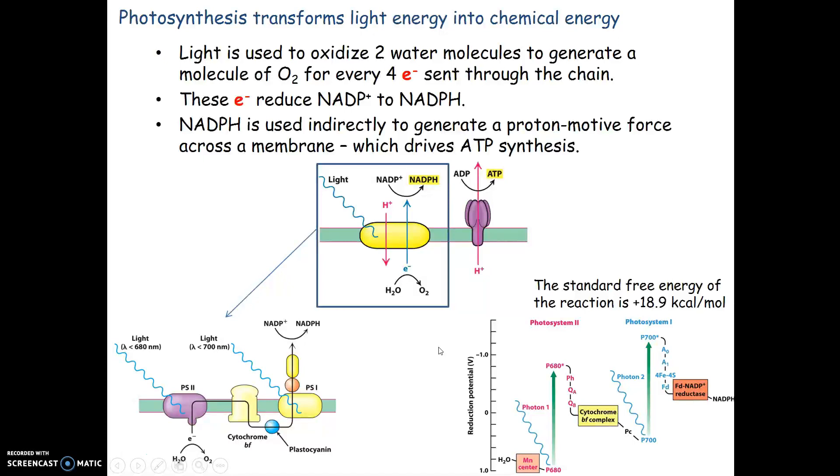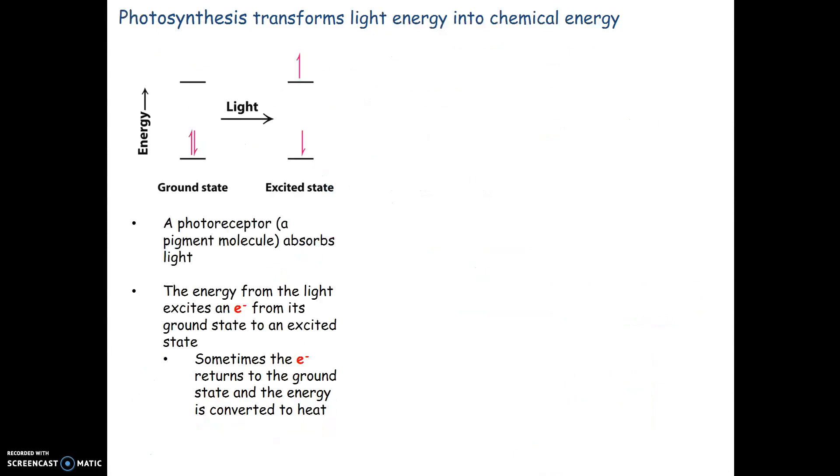This process allows us to form NADPH that we can use later on. This is going to create a proton gradient that is used to form ATP, just like we saw in cellular respiration.